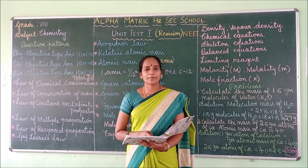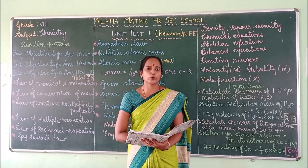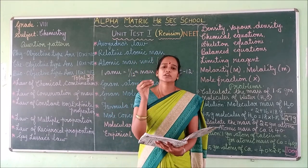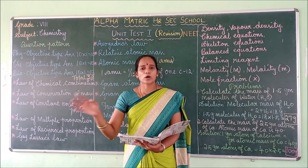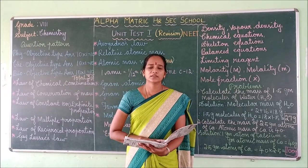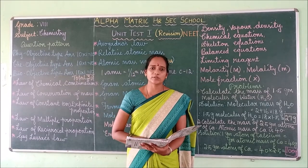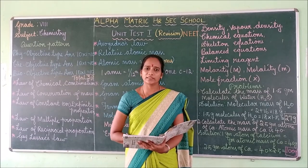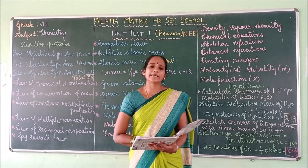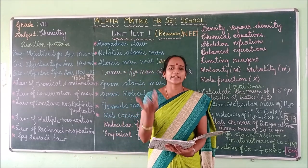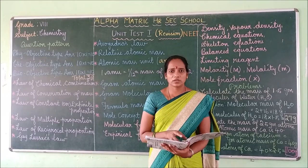Next question: who proposed atomic theory? A scientist's name will be given to you — for example, options like Mendeleev or John Dalton. The answer is John Dalton. John Dalton proposed atomic theory in 1808. Sometimes you will be asked to write the year, so you should learn that year too.